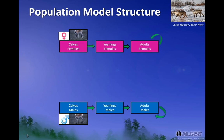For example, a certain proportion of calves become yearlings — calf survival. A certain proportion of yearlings survive to become adults — yearling recruitment. And similarly, only a proportion of adults survive from one year to the next — adult survival. The long green arrow linking adult females to calves is the annual rate of births, which is generally referred to as calf productivity.